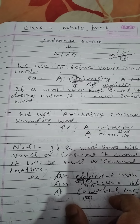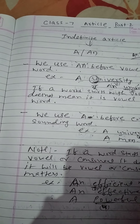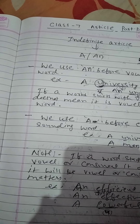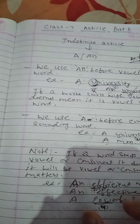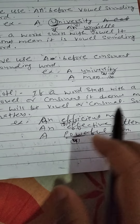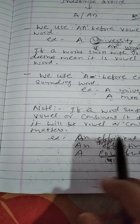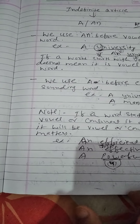Before using A or AN, it should be clear whether the sounding of the word is vowel or consonant. In 'university' and 'umbrella,' both words start with the vowel letter U, but the sounds are different. 'Umbrella' is vowel-sounding so it takes 'an umbrella'; 'university' is consonant-sounding so it takes 'a university.' Similarly, 'an efficient man' — E is a vowel sound. 'Effective' is also vowel-sounding, so 'an effective.' But 'powerful' — P is consonant-sounding — so we use 'a powerful man.'